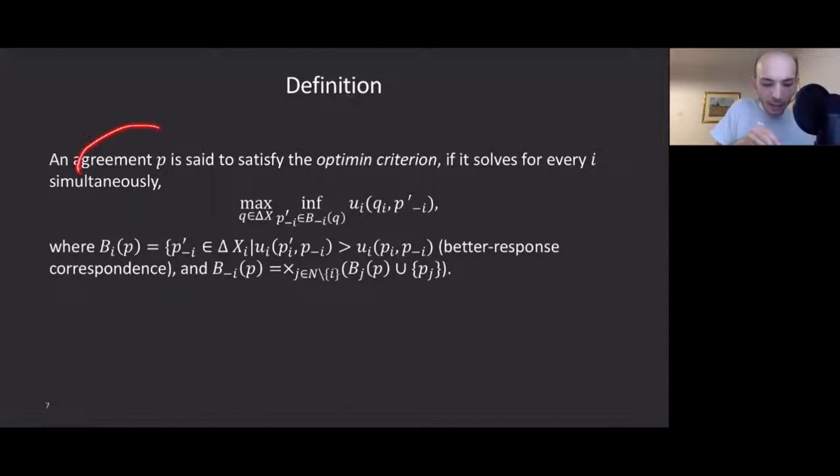Here is the definition in non-cooperative games. An agreement p, which is a strategy profile, is said to satisfy the Optimin criterion if it solves for every i the following multi-objective maximization problem. The intuition behind this definition is as follows. If an agreement or strategy profile is a Nash equilibrium, then it means that there is no unilateral profitable deviation. It's a self-enforcing agreement. But if it is not a Nash equilibrium, it means that there will be someone who can deviate from the agreement. And I'm asking, what is my minimal payoff if a player or players unilaterally profitably deviate from an agreement?